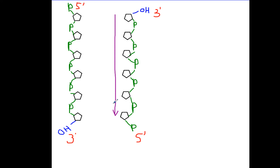Because in order to match, it has to run in an opposite direction. On our new piece, this would be the 5-prime end and this would be the 3-prime end. I hope that makes sense to you. We'll talk a little bit later in another installment about the actual replication process, transcription, and translation. We'll start with the next slide.